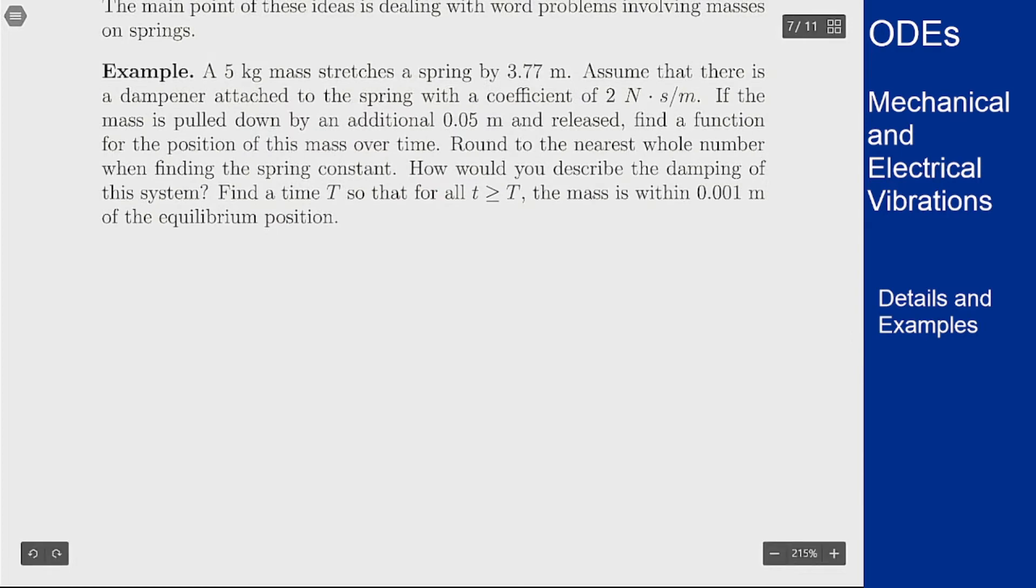And our base is an equation of the form m times y double prime plus gamma the damping coefficient times y prime plus the spring constant times y equals 0. We're told off the bat that the mass here is 5 and the damping coefficient is 2. All of these units in this problem work out so that this entire equation is in newtons: kilograms times meters per second squared, newtons times meters per second, and then the spring constant times meters. But the only thing we don't have yet is the spring constant.